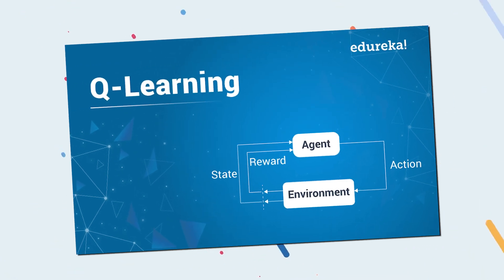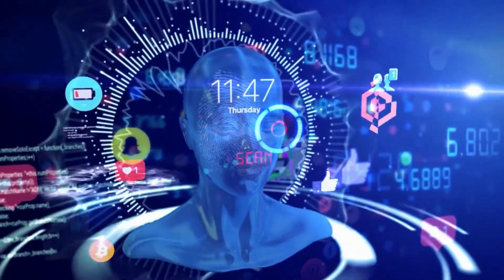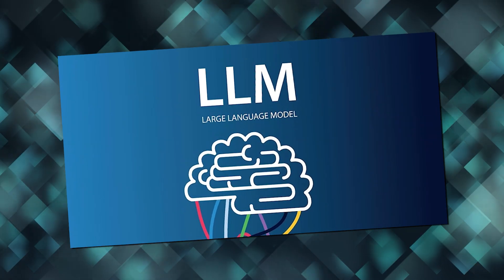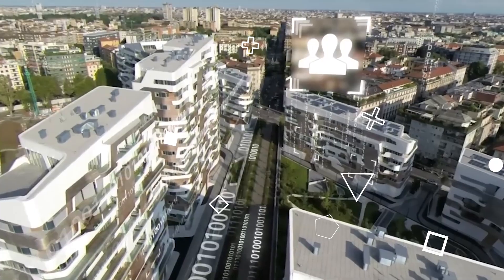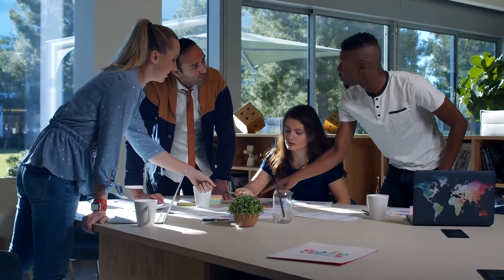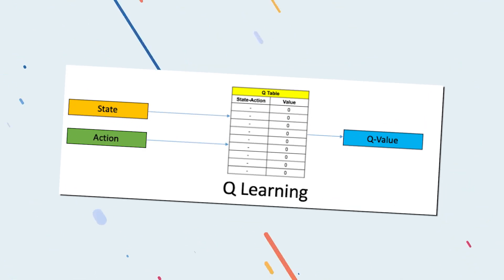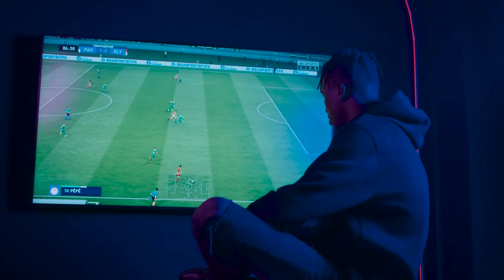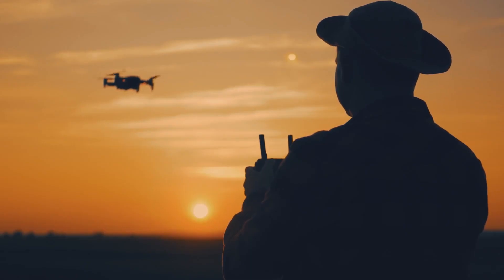Q-learning keeps updating its knowledge from new information and interactions. It stands out because it's more flexible and keeps learning over time, unlike LLMs which rely heavily on lots of data and don't change once they're trained. Q-learning is also really good at focusing on specific goals. While LLMs are great for general language tasks, Q-learning can be set up to meet certain targets, making it really handy for different uses like video games, robots, giving personalized tips, or making plans.